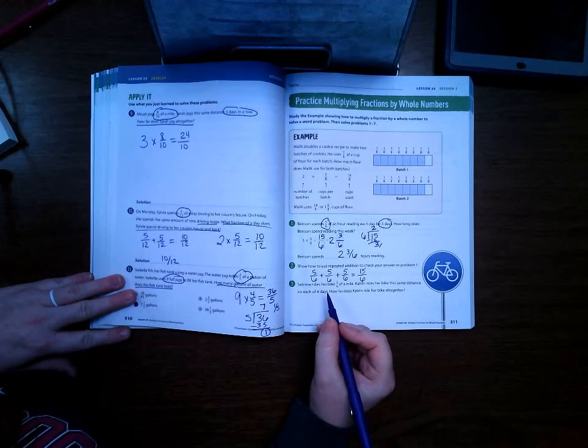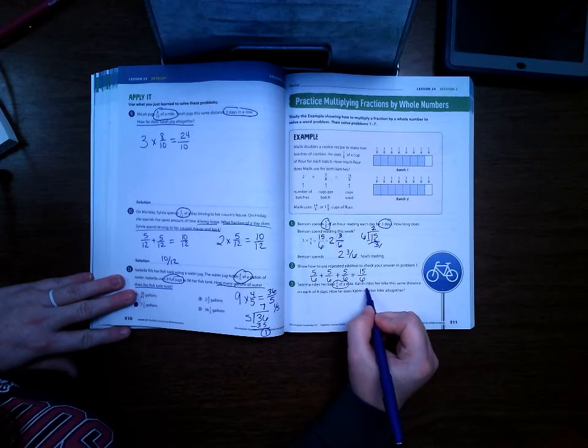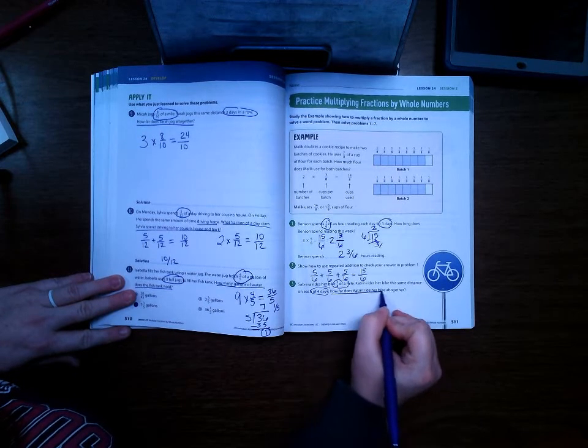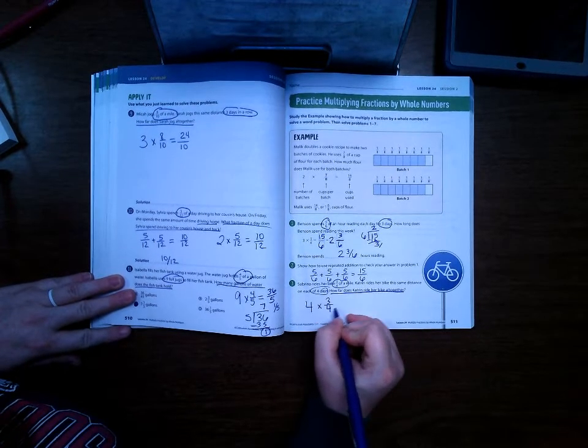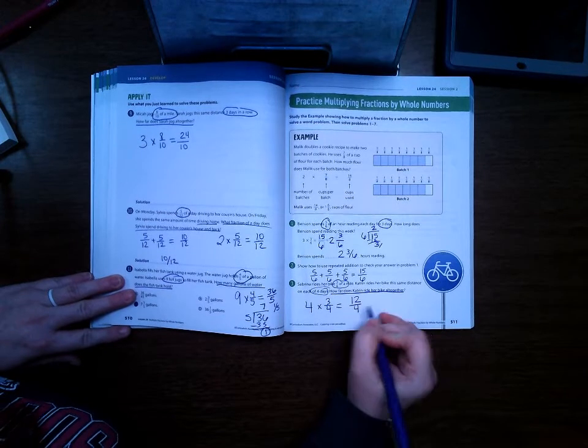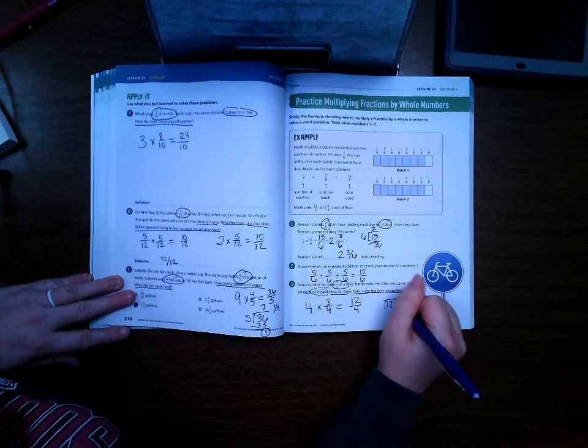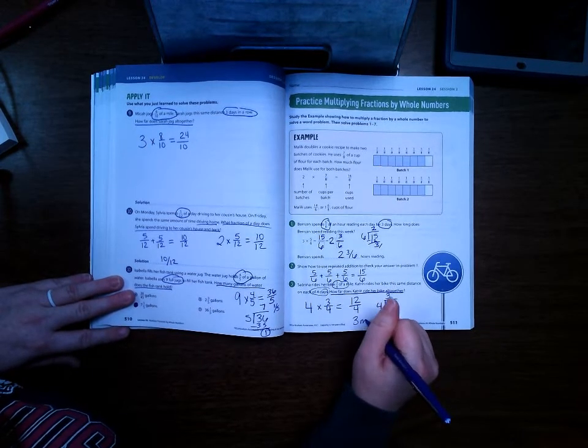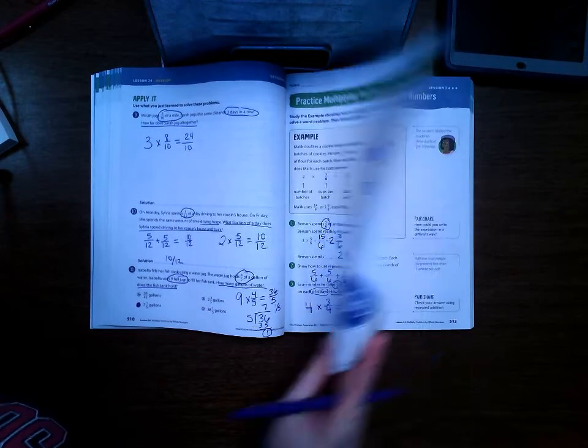Sabrina rides her bike three-fourths of a mile. Katrin rides her bike the same distance on each of four days. How far does Katrin ride her bike altogether? So it would be four times three-fourths, which is four times three, twelve-fourths. Or you can divide twelve by four and get exactly three miles. So it's twelve-fourths of a mile or three miles.